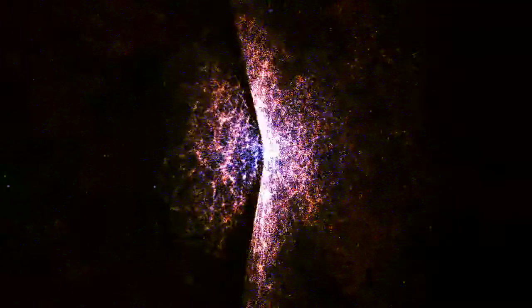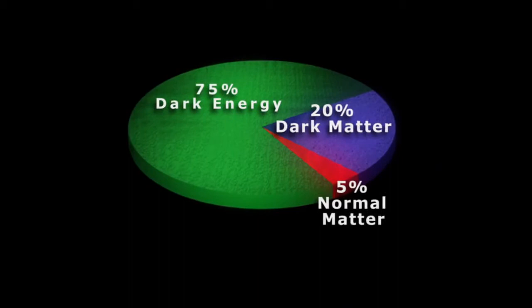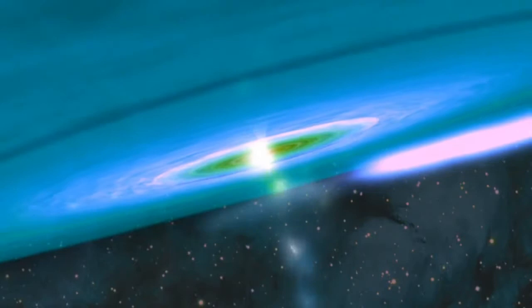For the first time, we actually have an inventory of the universe. But if you look at the accounting, 95% of the stuff is in forms yet to be fully understood. And so we know a lot, but we understand much less. And among the 5% that scientists call ordinary matter lie yet more mysteries, the most perplexing of which are black holes.